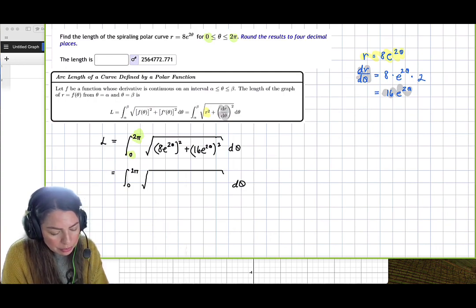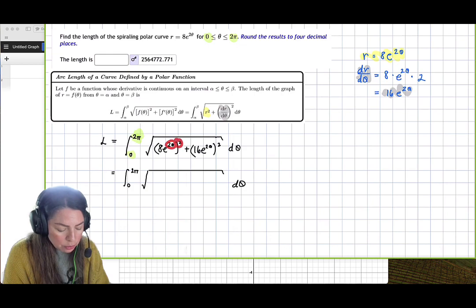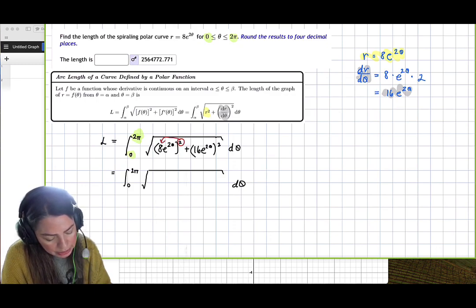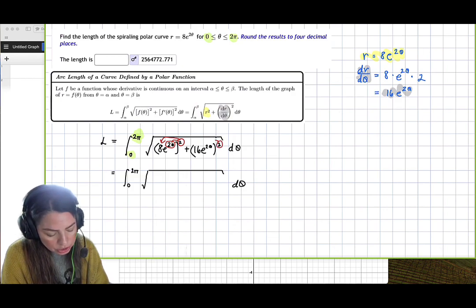So we do know we have to be careful with our exponent rules. We have 8 squared and then e to the 2 theta squared. So remember a base to a power to a power, we will multiply these and then we take 8 squared. So we just want to make sure that we take it to also the coefficient in addition to the function and exponent property part itself.